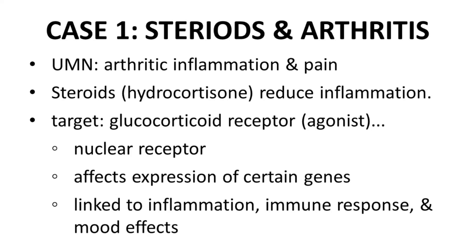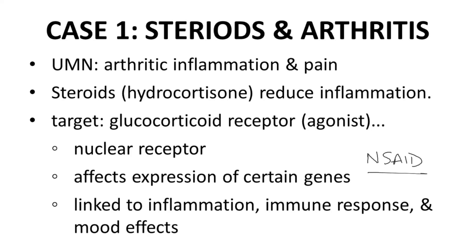Patients taking hydrocortisone for arthritis pain do sometimes report odd mood changes, and this is a form of on-target toxicity. Candidly, while hydrocortisone does demonstrate on-target toxicity, hydrocortisone's off-target toxicity on the mineralocorticoid receptor poses the more problematic risk to patients. Today's steroids are less often used for arthritis pain. They were replaced with NSAIDs — non-steroidal anti-inflammatory drugs — which are not ideal but better tolerated than steroids.